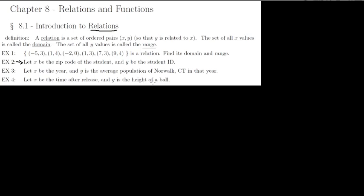Another example: x could be the year, and y would be the average population in Norwalk, Connecticut for that year - relating the year to the number of people living there. Or if you take a ball and drop it, you can measure the height at any given time. If x is the time and y is the height, these two things are definitely related. Let's go back to the idea of a collection of ordered pairs that form a relation.